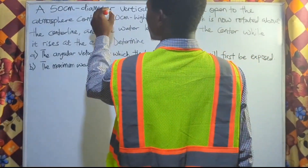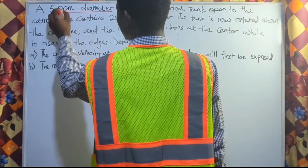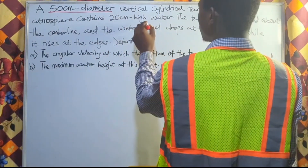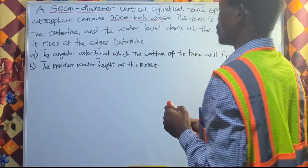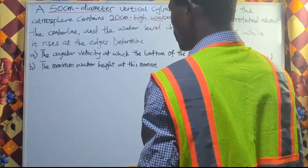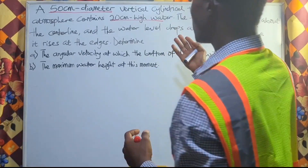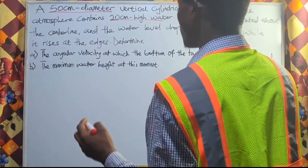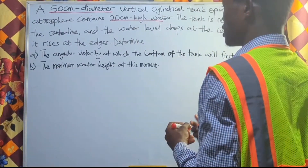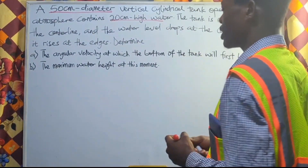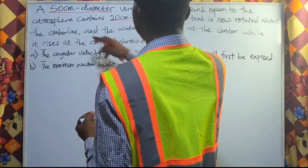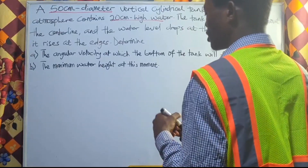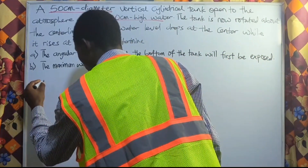Let's identify our parameters. We first have the diameter of the cylindrical tank and we also have the original height of the water. In order to solve this question we need a diagram which will aid our solution. They said there is water inside a cylindrical tank, so let's draw our cylindrical tank.